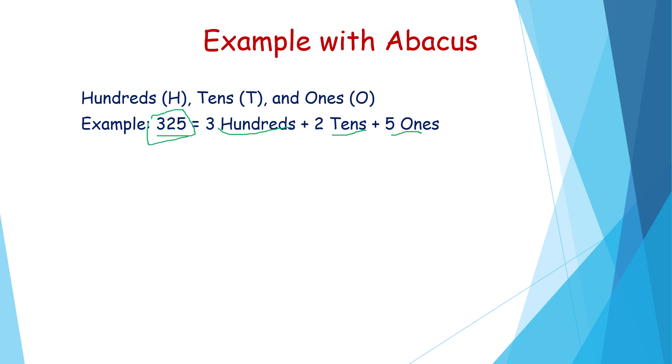Now, in the hundreds place, how do we write in shortcut form? H. In the tens place, T. And ones place, O. Now let's draw the abacus.